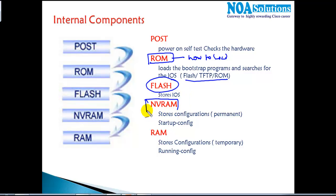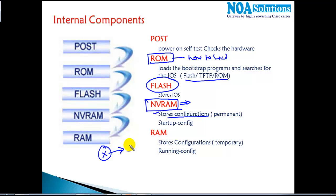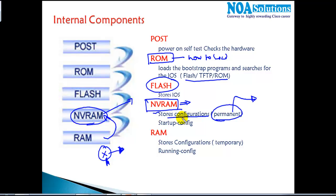Then we have something called NVRAM — Non-Volatile RAM. It is like permanent memory which stores all your configurations. Configuration means whatever changes you made — for example, changing the router name, IP addresses, routing configurations, NAT, or ACL settings. If you want those changes to be permanent — meaning they should persist even after a reboot — you must save the configs, and NVRAM is where all configurations are stored permanently. NVRAM is also called startup configurations.